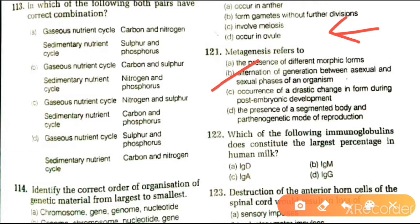Next question: which of the following immunoglobulins constitutes the largest percentage in human milk? Options are IgD, IgM, IgG, IgA. The answer is IgA. All types of immunoglobulins are found in human milk, but secondary IgA is one type of immunoglobulin that connects to the ear, eyes, nose, throat, and the gastrointestinal tract, helping protect these areas.